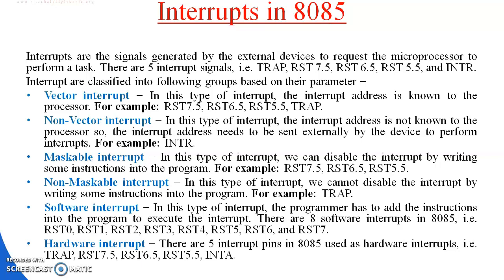Interrupts are classified into two types based on their parameters. First are vectored interrupts. In this type of interrupt, the interrupt address is fixed to a specific memory location. For example, RST7.5, RST6.5, RST5.5, and INTR — these are all vectored interrupts.